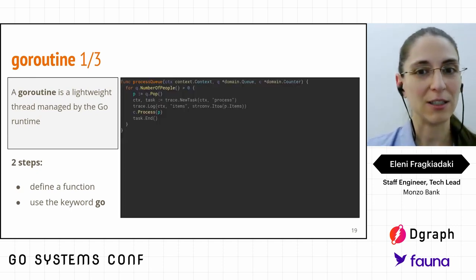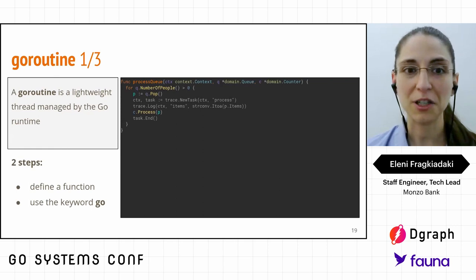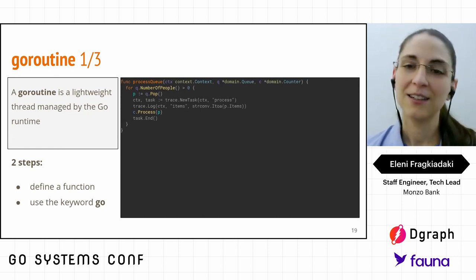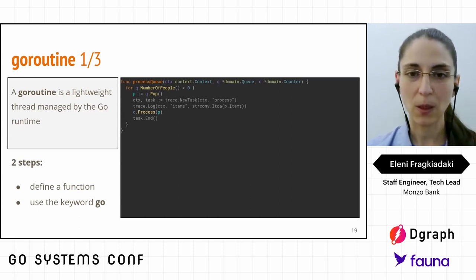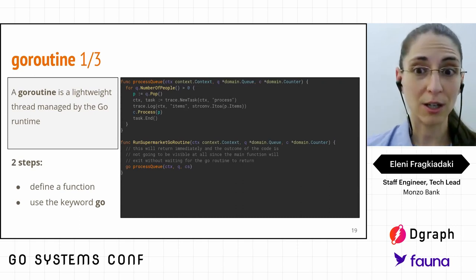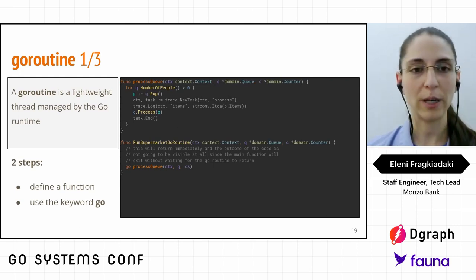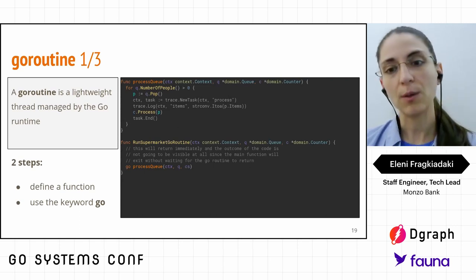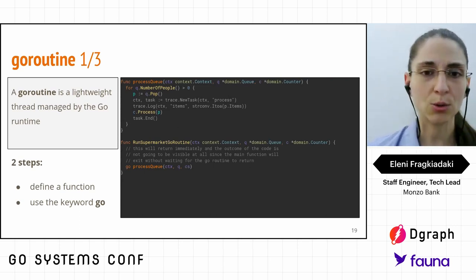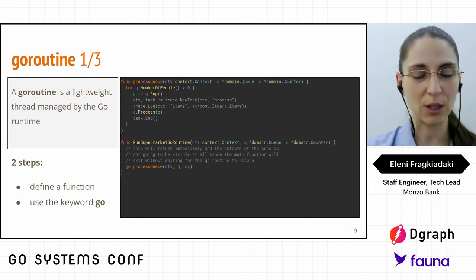In our code, we extract the for loop logic into a function called ProcessQueue, which accepts the context, queue, counter, and trace output parameters. In the function that triggers our app, we replace the body with the `go` keyword plus the call to ProcessQueue with the desired parameters. That's all it takes to create a goroutine — extract the logic into a function, prefix the call with `go`, and we're set.